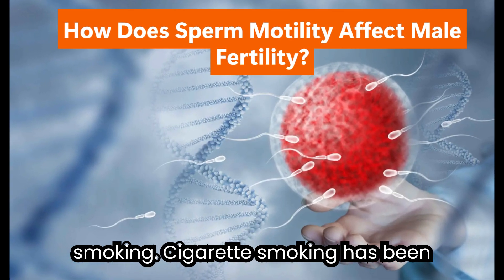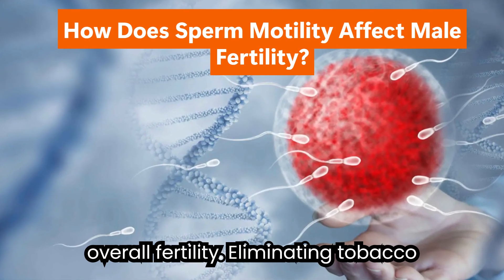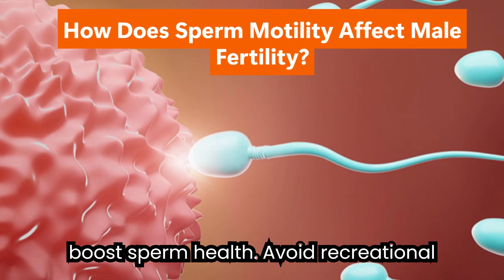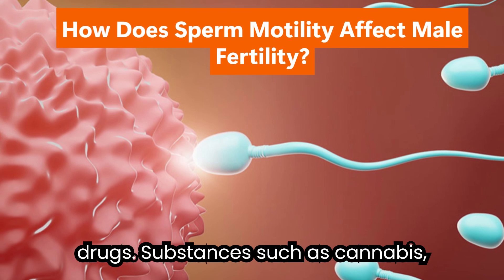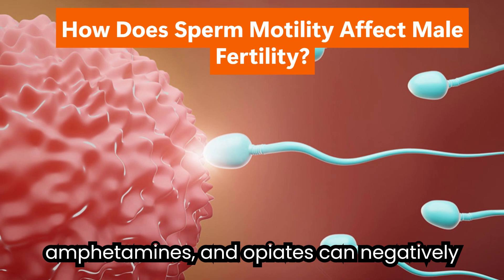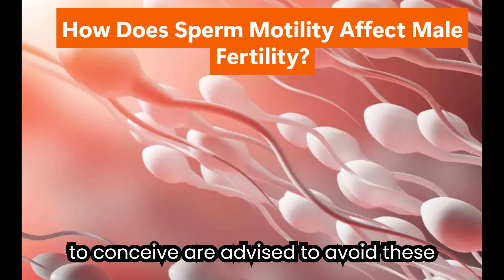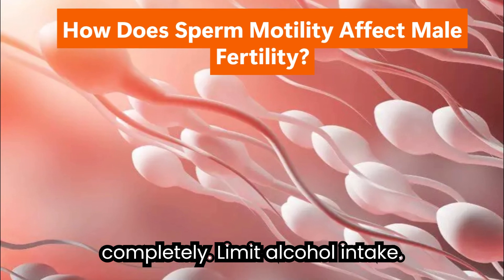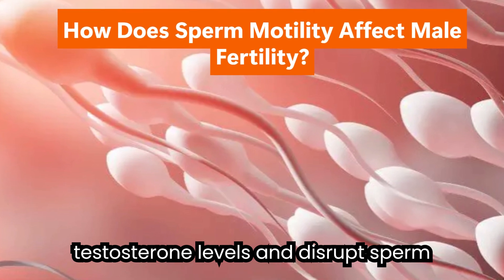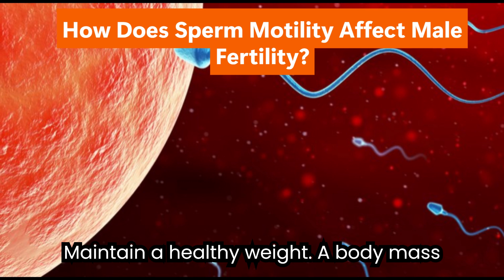Quit smoking: cigarette smoking has been linked to reduced sperm motility and overall fertility, and eliminating tobacco use is one of the most effective steps to boost sperm health. Avoid recreational drugs: substances such as cannabis, amphetamines, and opiates can negatively impact semen quality, and individuals trying to conceive are advised to avoid these completely. Limit alcohol intake: excessive alcohol consumption may lower testosterone levels and disrupt sperm production, so moderation is key.